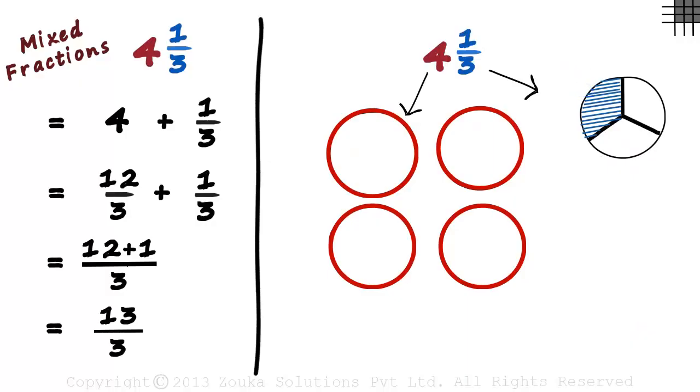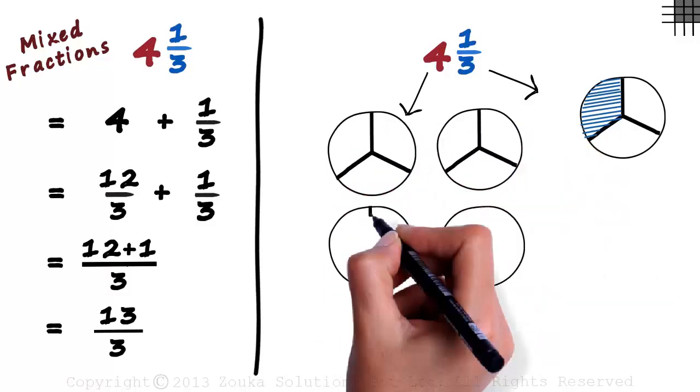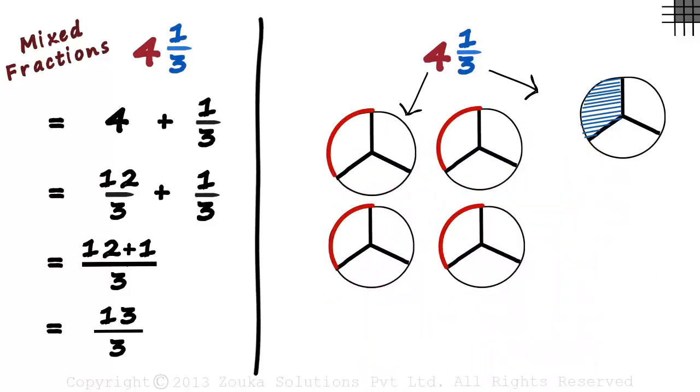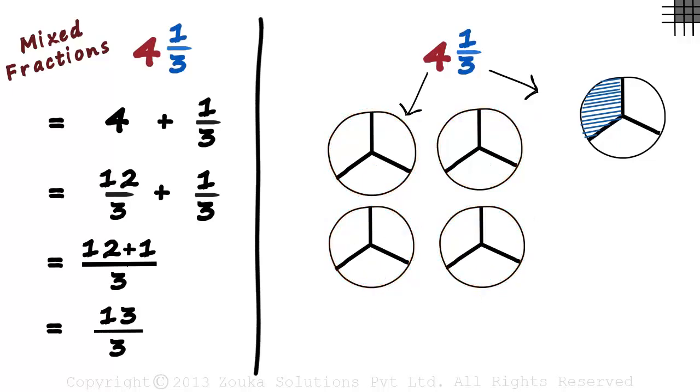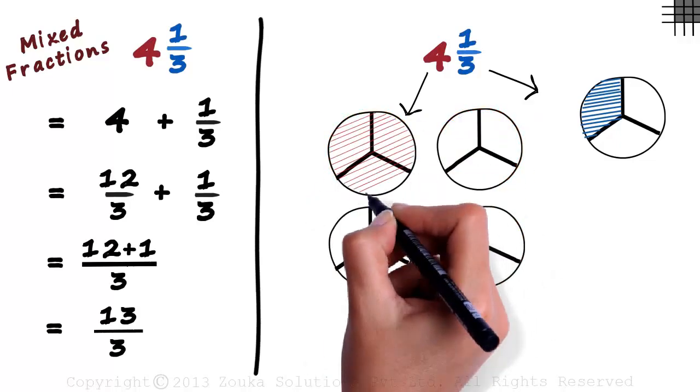These 4 circles can be looked at in a different way. We divide each of these circles into 3 equal parts. Nothing changed. We just divided each circle into 3 equal parts. To represent 4, we shade the 4 circles.